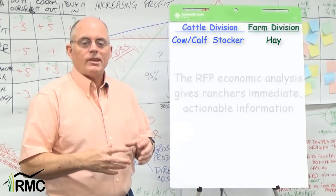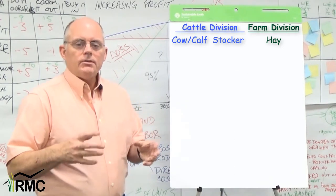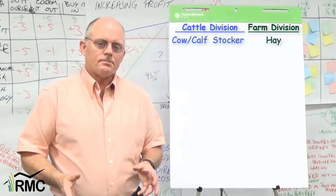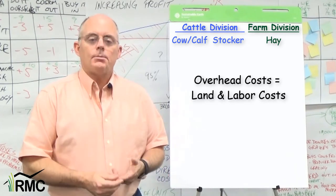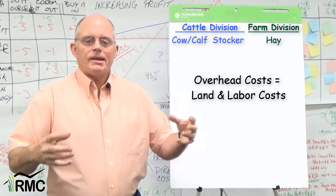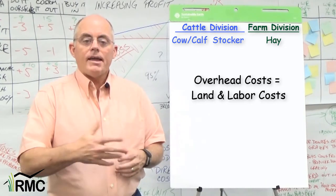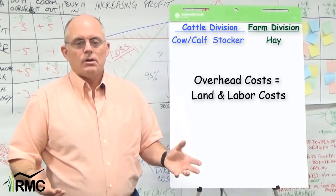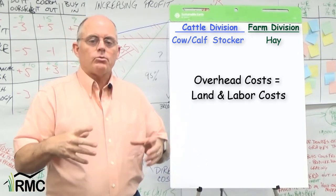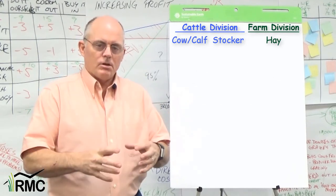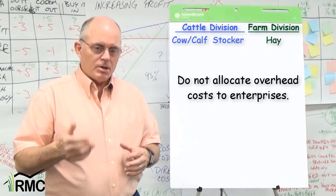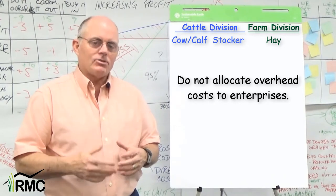We start by grouping enterprises into divisions. A division is simply a group of enterprises that share similar overhead costs. Overheads include your land and labor costs. Here we put our cow-calf and stocker enterprises in a cattle division. Our hay enterprise would have different overheads, so we put it in a farming division. Even though it's still only one enterprise, we would put it in its own division, because we don't allocate overhead costs to enterprises. But under some circumstances, they can be allocated to a division.